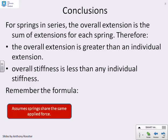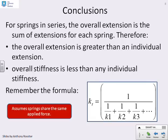Some conclusions then. For springs in series, the overall extension is the sum of the extensions for each spring, and therefore the overall extension is greater than an individual extension for a single spring, and the overall stiffness must be less than the individual stiffness for a single spring. And the formula you need to use—and you'll recognize this by now because it's the same as for parallel resistors, parallel pipes, and parallel conductors—is stiffness kt equals 1 over (1 over k1 plus 1 over k2 plus 1 over k3 and so on).